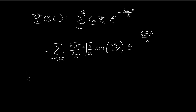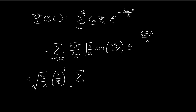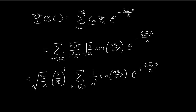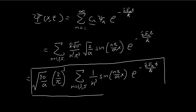Let's arrange this in the way Griffiths does in the book. He combines the 2 and the 15 to become the square root of 30 divided by a. Then he groups up the 8 and π as 2 over π to the power of 3, because 2 cubed is just equal to 8. And then we have the rest of the terms inside the summation: n to the power of 3, sine(nπx/a), times e to the power of negative i En t divided by ℏ. This is your final answer — the wave function of a particle stuck inside the infinite square well satisfying the given initial condition.